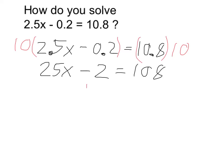With no more decimals, I treat it like a regular two-step equation. I'm going to add 2 to both sides, and that gives me 25x is equal to 110.